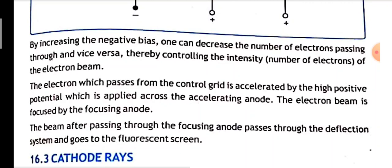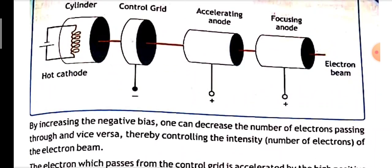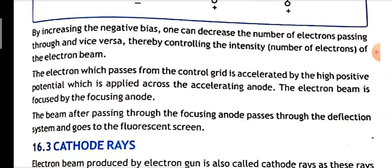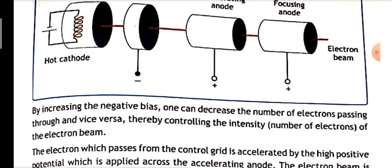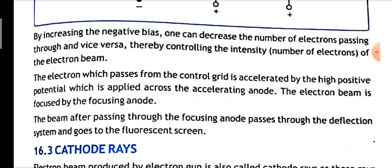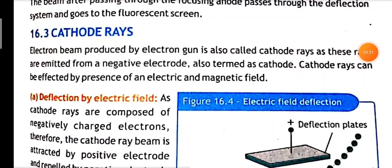The electron beam is focused by the focusing anode. The beam, after passing through the focusing anode, passes through the deflection system and goes to the fluorescent screen.